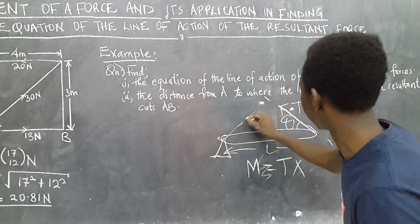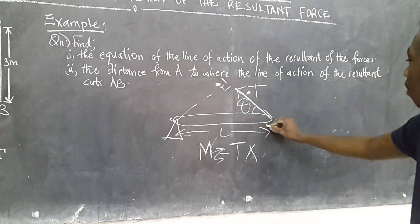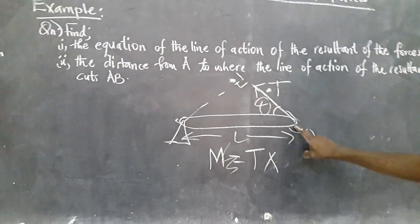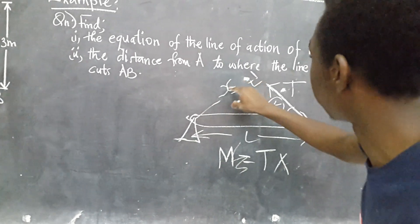So, this perpendicular distance is this, and you cannot expect this perpendicular distance to be the same, because this angle is greater than 90. So, this perpendicular distance, let me say if it is X,